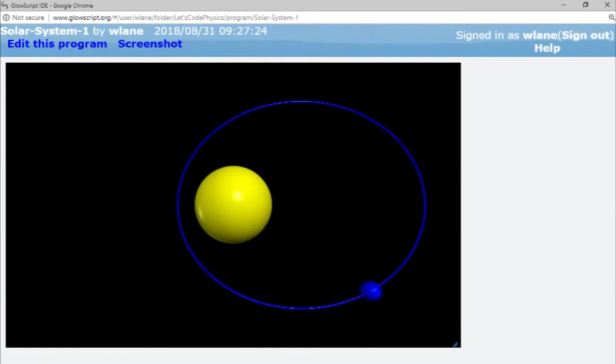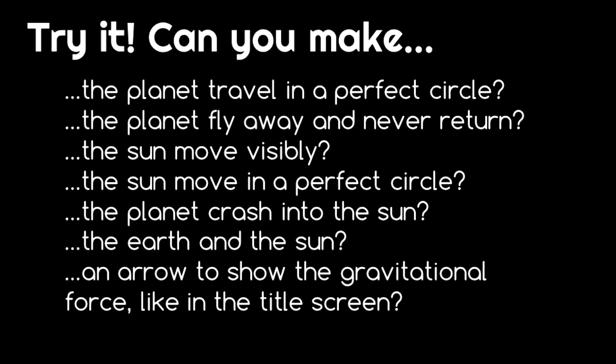There are other properties you can change to explore how orbits behave: the position of the planet, the momentum of the planet, and the momentum of the sun. Copy this code from the link in the description below and modify these properties to see if you can achieve the following results.